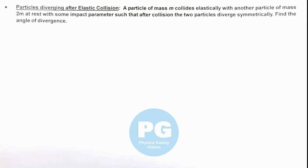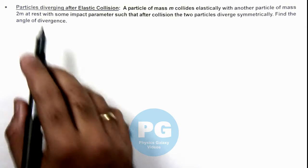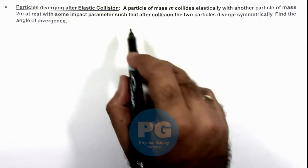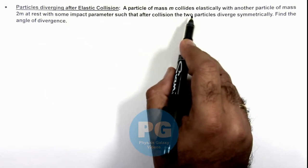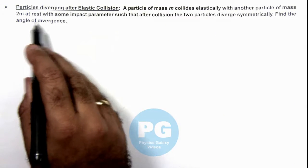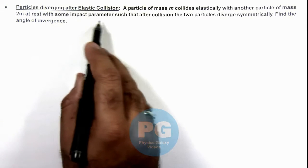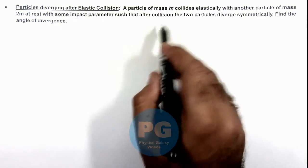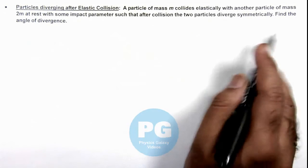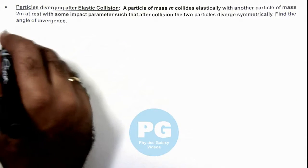In this illustration we'll analyze the particles diverging after elastic collision. Here we are given that a particle of mass m collides elastically with another particle of mass 2m at rest with some impact parameter such that after collision the two particles diverge symmetrically. So here we are required to find the angle of divergence.